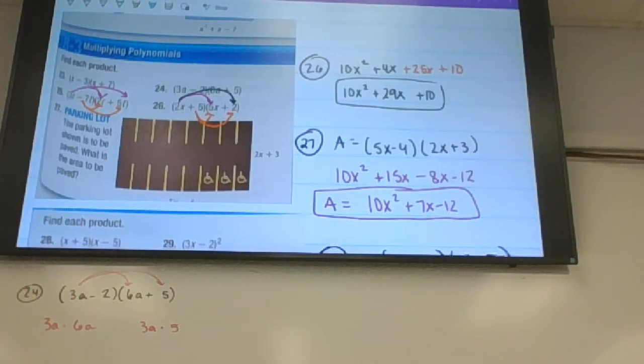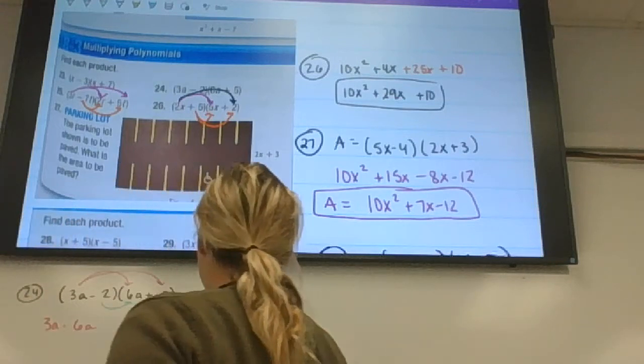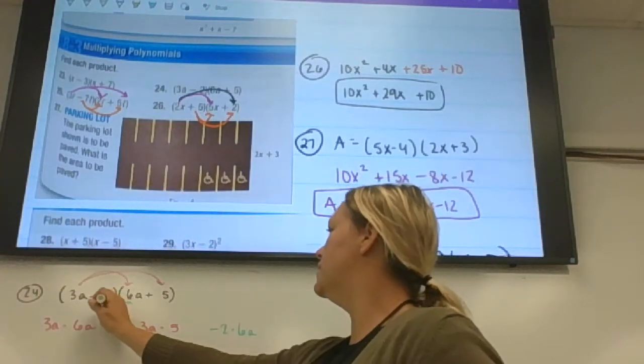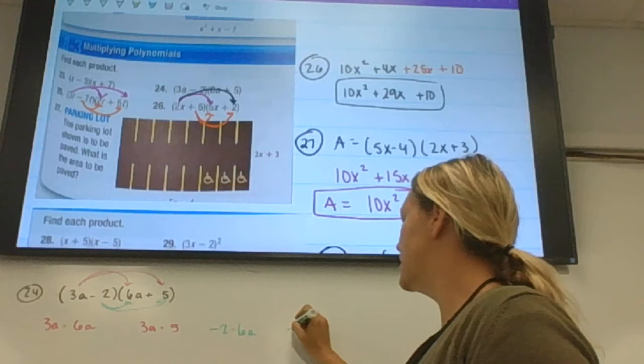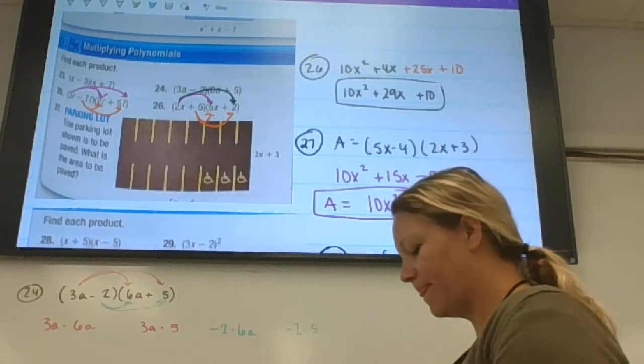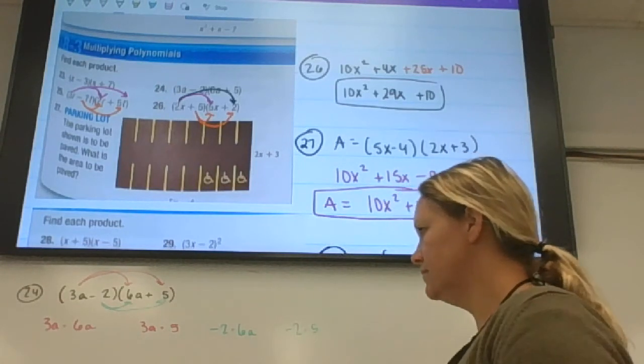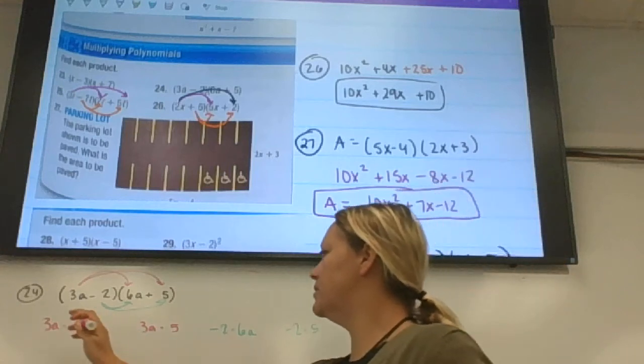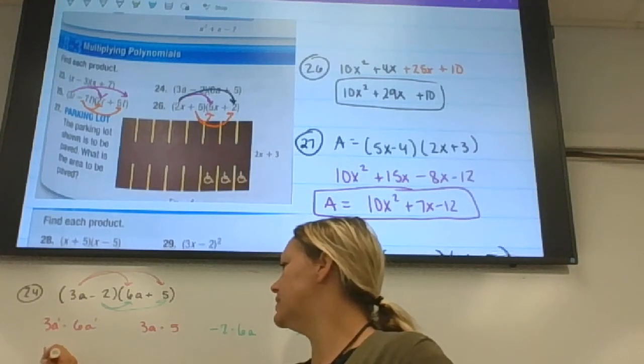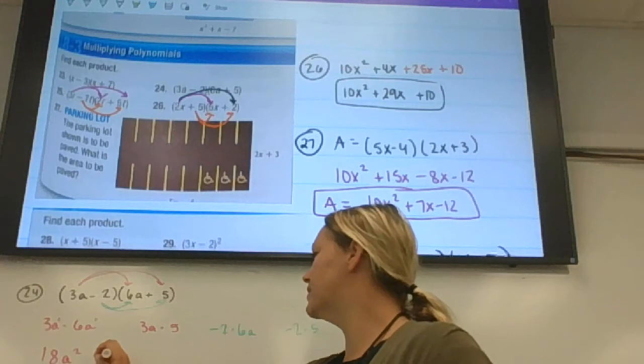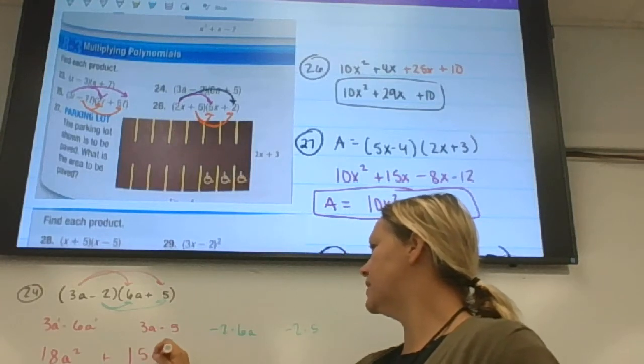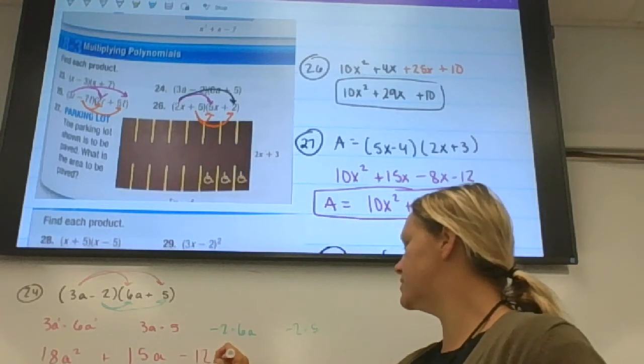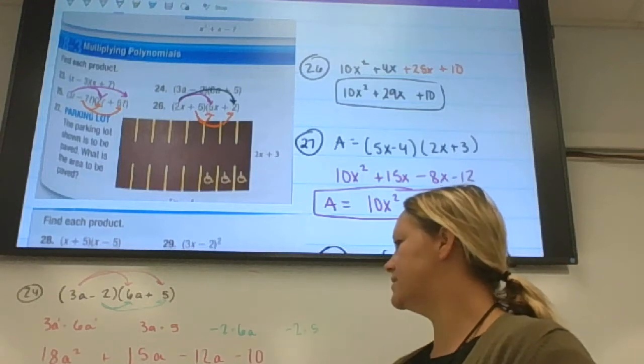And then you distribute the negative 2 and you do negative 2 times 6a, and then the negative 2 times 5. So when you multiply you add an exponent, so this would be 18a squared plus 15a minus 12a minus 10.